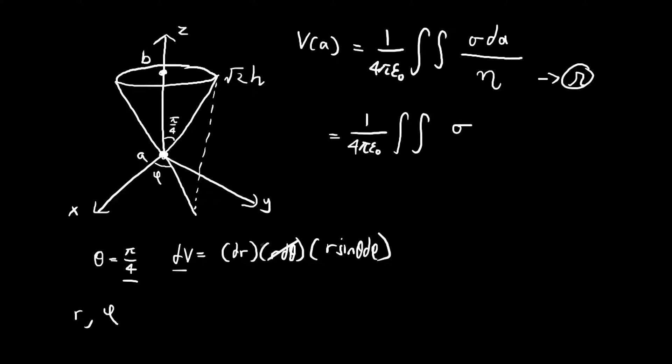In this case, because our d theta is locked in, we can essentially ignore this component. This gives us a dA of r sine theta dr d phi. The theta in our case is pi over 4, so sine pi over 4 is 1 over the square root of 2.